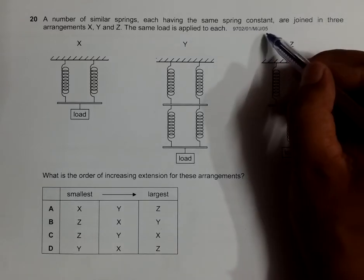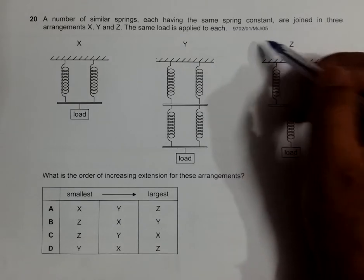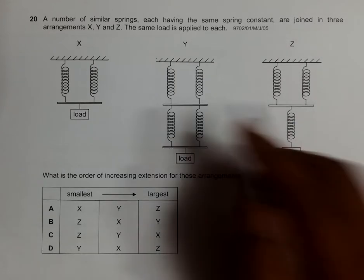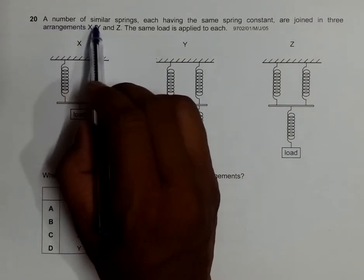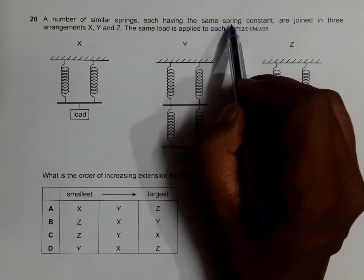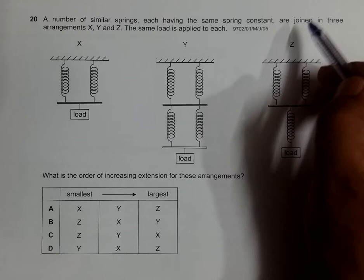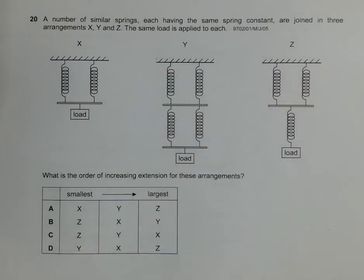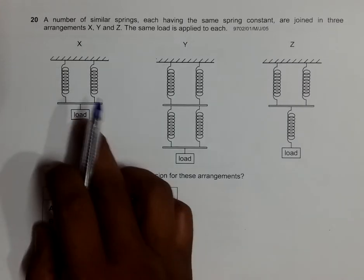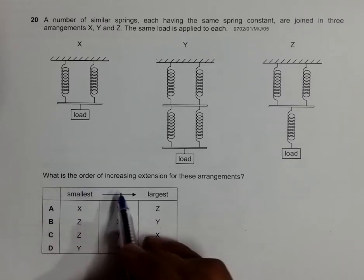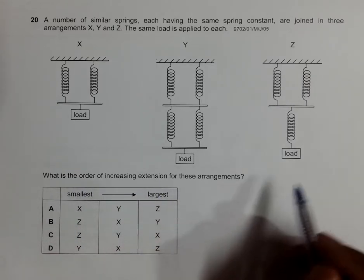This question belongs to 2005 May June paper 1, question number 20. It says that a number of similar springs, each having the same spring constant, are joined in three different arrangements X, Y, and Z. The same load is applied to each of them. We have to find what is the order of increasing extension for these arrangements.